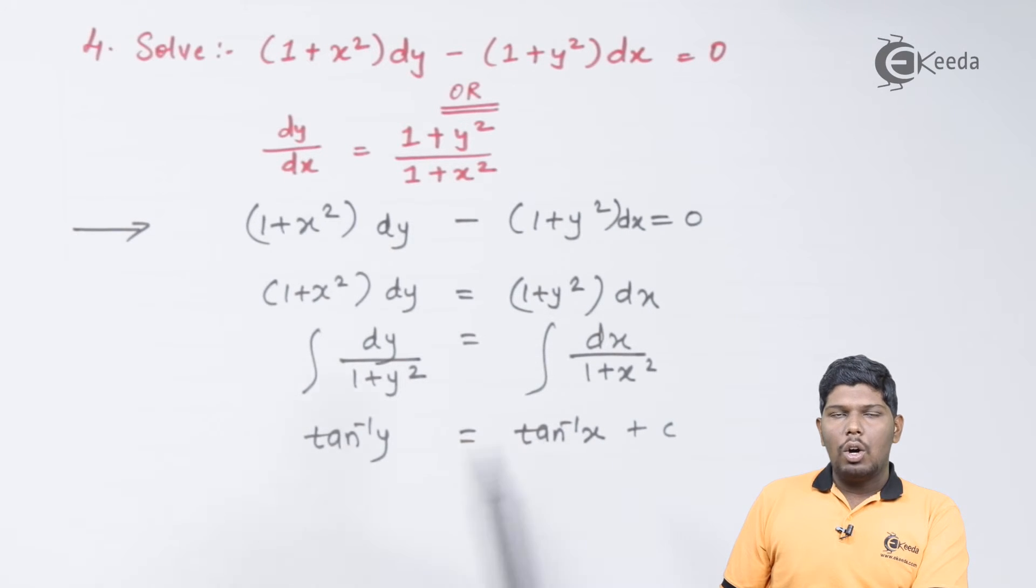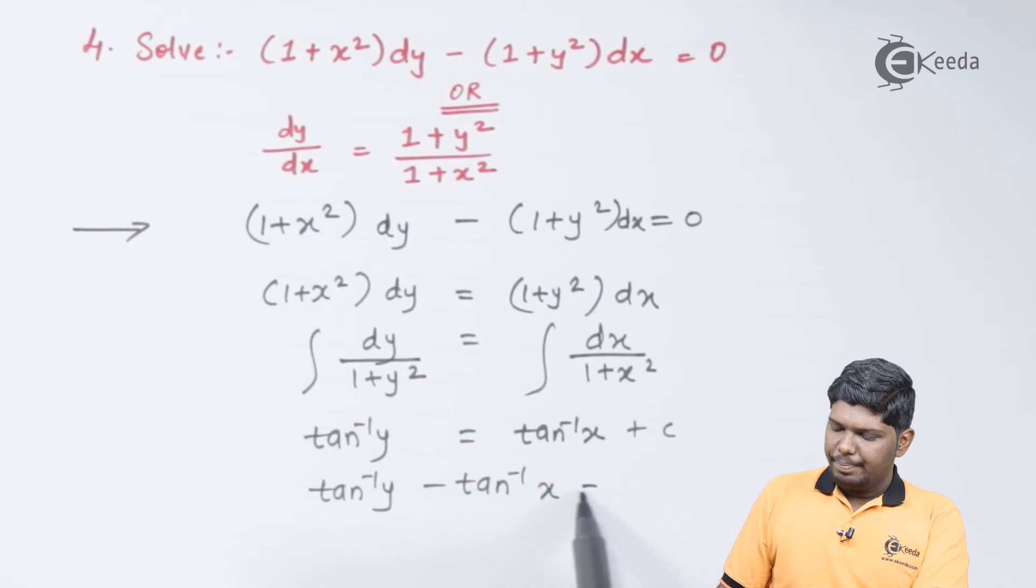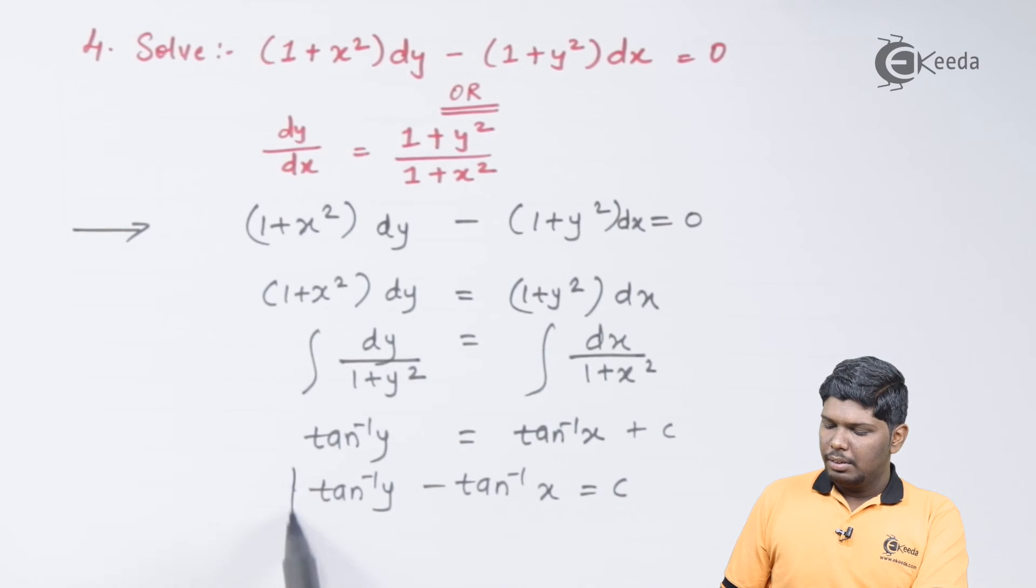Now, taking tan⁻¹(x) on the left hand side, we have tan⁻¹(y) - tan⁻¹(x) = c. This becomes our general solution.